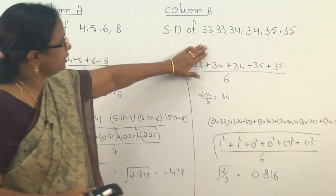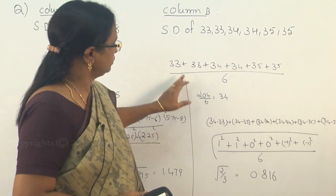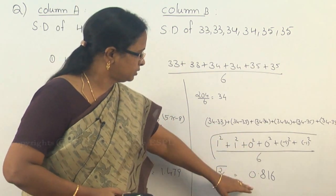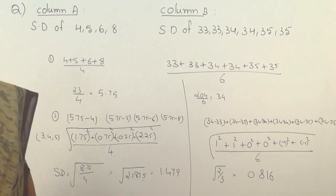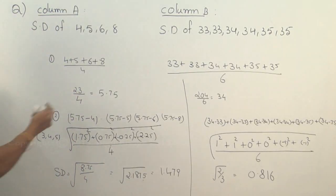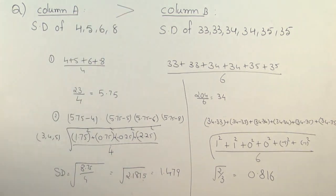In the other side, here we have the mean as 34. So here 33, the difference of each one you are taking it. Again, you are doing the same process. You are getting the standard deviation is 0.816. Therefore, the column A value is greater compared to column B. The standard deviation of column A is greater than column B.